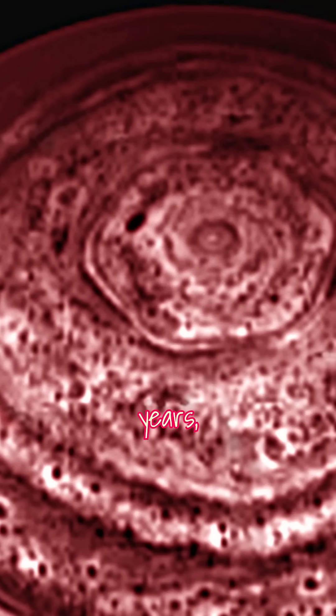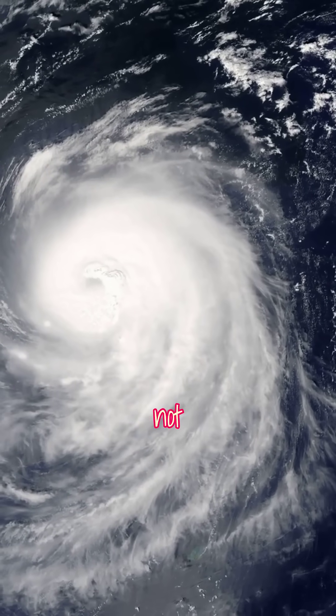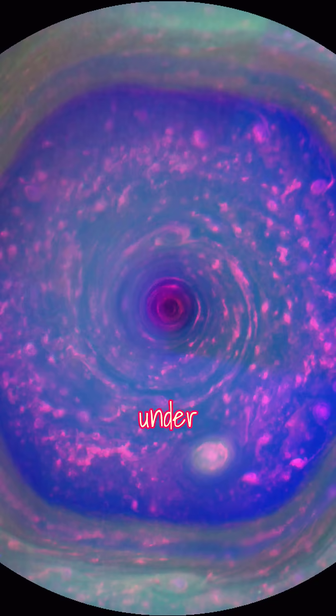For years, scientists weren't sure how that was even possible. Storms are chaotic, not tidy geometrical shapes. But it turns out, under the right conditions, polygons can form if fluids are rotated at different speeds.